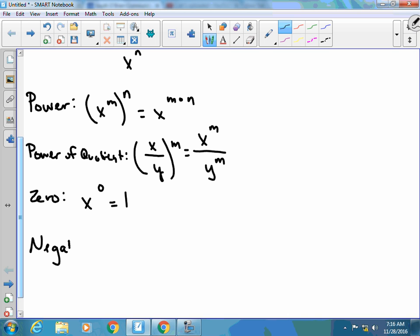As well as negative exponents is our last rule. So if I have x to the negative m, this really equals one over x to the m.